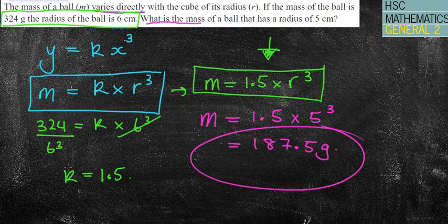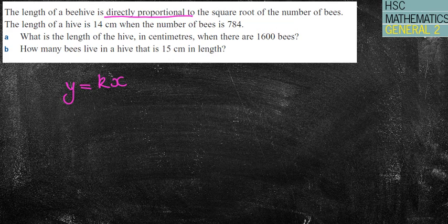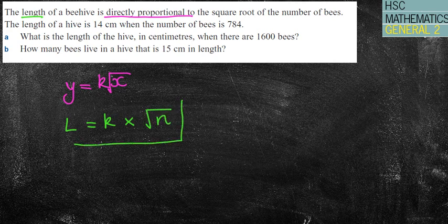Although they're pretty tough questions — especially when you have cubes and squares — it becomes quite monotonous in terms of how you answer them. It's pretty much the same every time; some questions might have parts A, B, and C, others won't. Next question: the length of a beehive is directly proportional to the square root of the number of bees. So y equals kx, and I'll use L for length: L equals k times the square root of N, where N is the number of bees.